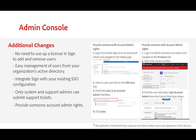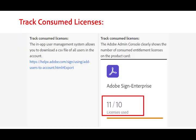This allows admins to manage settings and user groups inside of Sign. With the prior flow, admins had to periodically export and review the active versus inactive user list from the legacy system. With the new platform, it is now possible to track the users and number of active users in the Admin Console overview page, without having to log in to the Acrobat Sign dashboard.